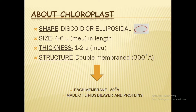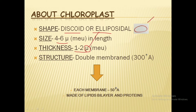The shape of the chloroplast is somewhat discoid or ellipsoidal — this is how the ellipsoidal shape looks like. The size of the chloroplast is about 4 to 6 µm in length and the thickness is about 1 to 2 µm. If we look at the structure of the chloroplast, we can see that it is a double membrane structure.